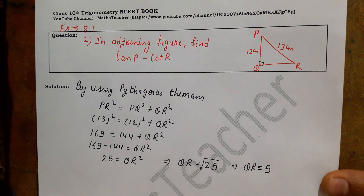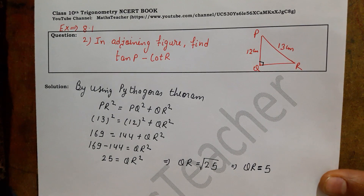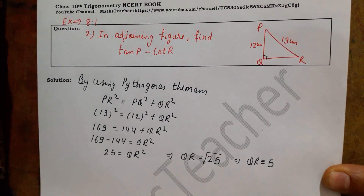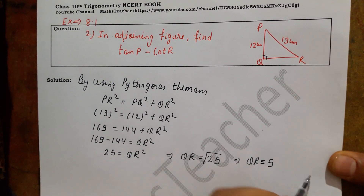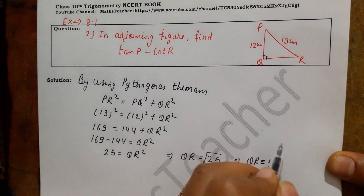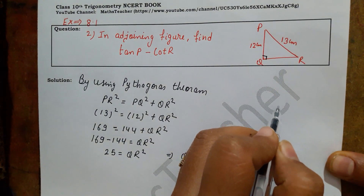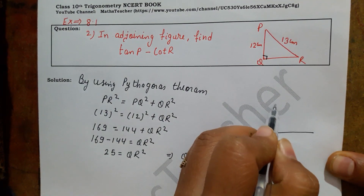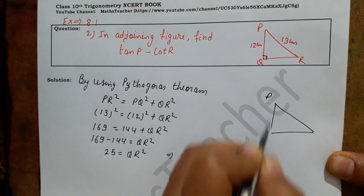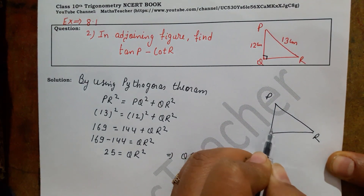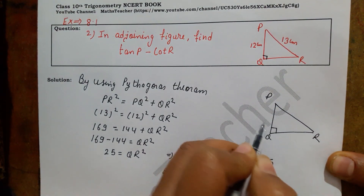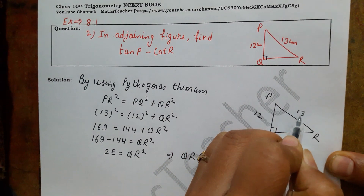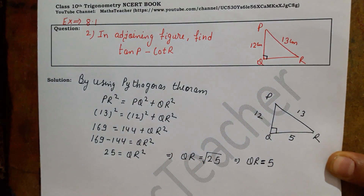Now our figure is complete. Here I draw the triangle with PQ equal to 12, PR equal to 13, and QR equal to 5.